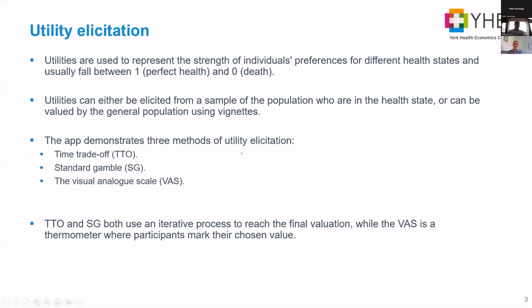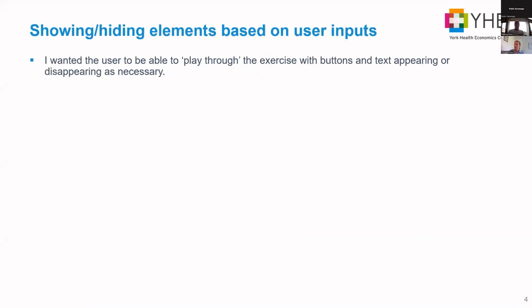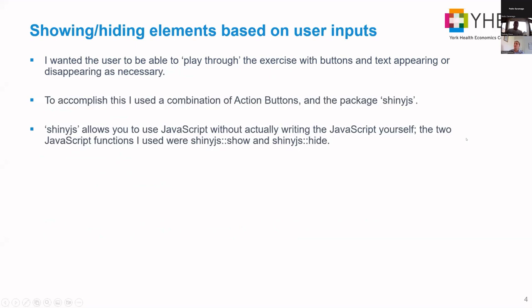Now I'll go into how I developed the app. The main thing I wanted was for users to play through the exercise almost like a game, with buttons and text appearing and disappearing as necessary. To accomplish this I used a combination of action buttons and the ShinyJS package — Shiny JavaScript — which allows you to use JavaScript without actually having to write it yourself. The two functions I used were show and hide.